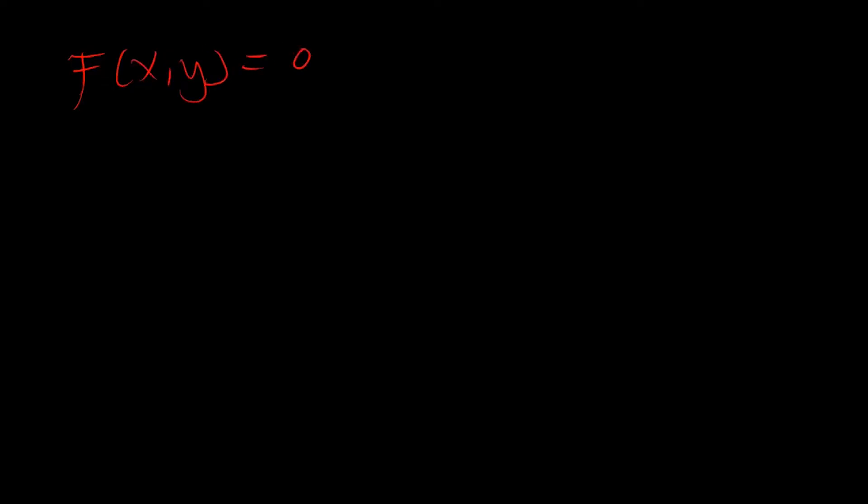Welcome back to the channel Einstein Mechanics. Today we are going to talk about implicit and parametric differentiation. Let's start with implicit differentiation. Let's consider a function defined by the equation f(x, y) = 0, where one of the variables, x or y, is not solved for explicitly in terms of the other variable. Then one says that y is defined as an implicit function of x.